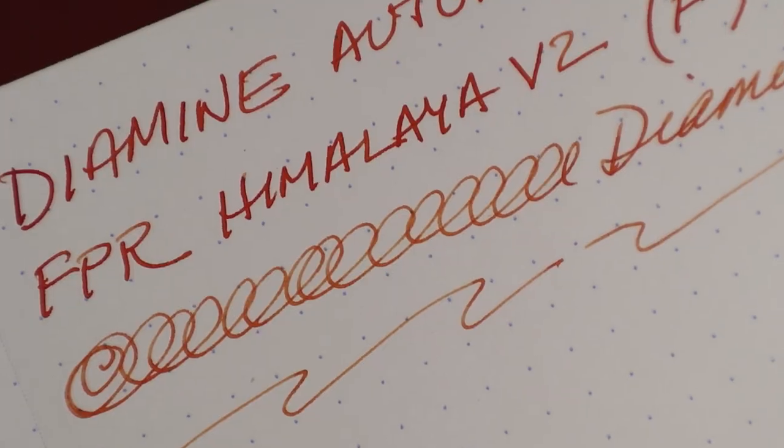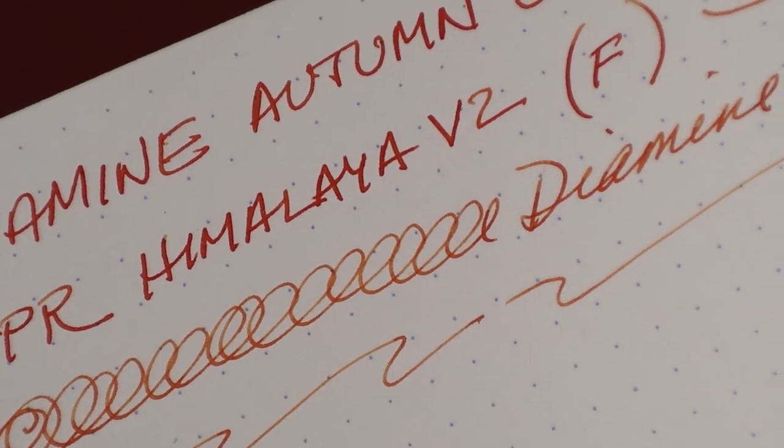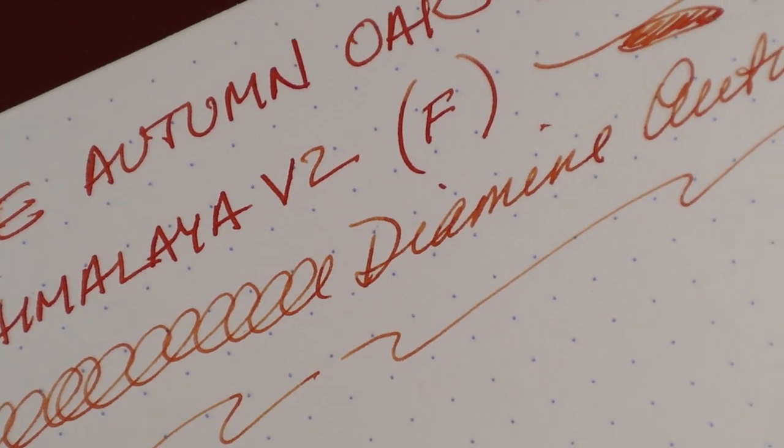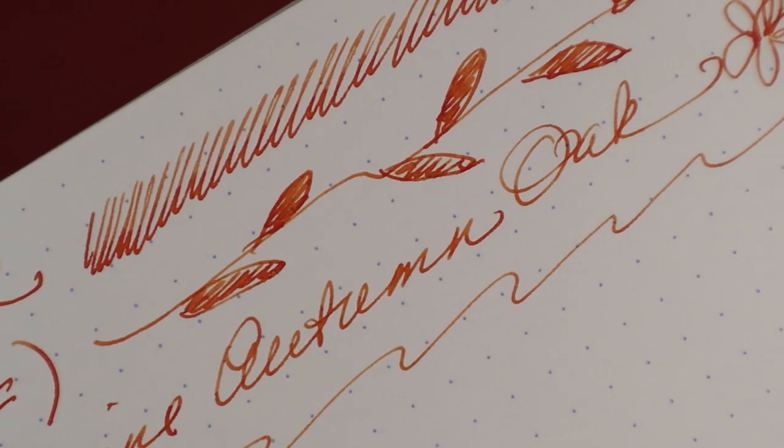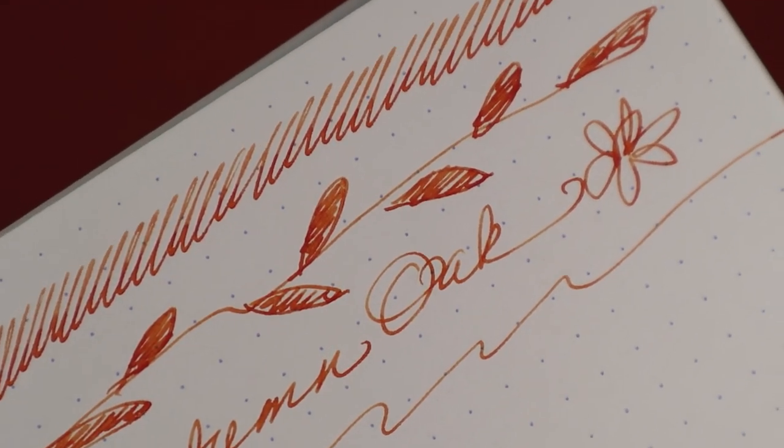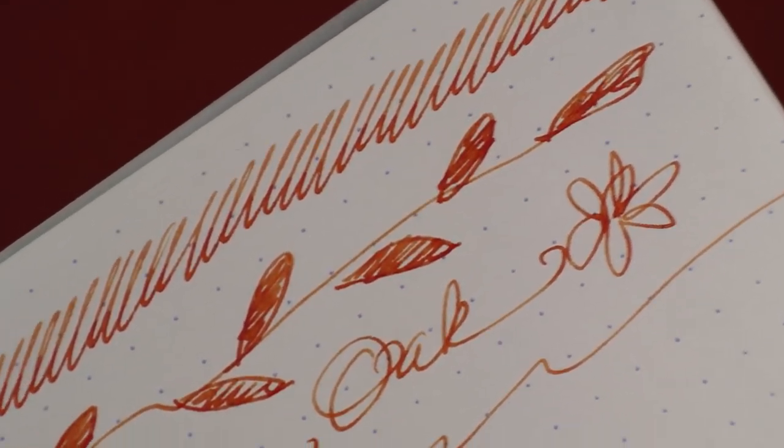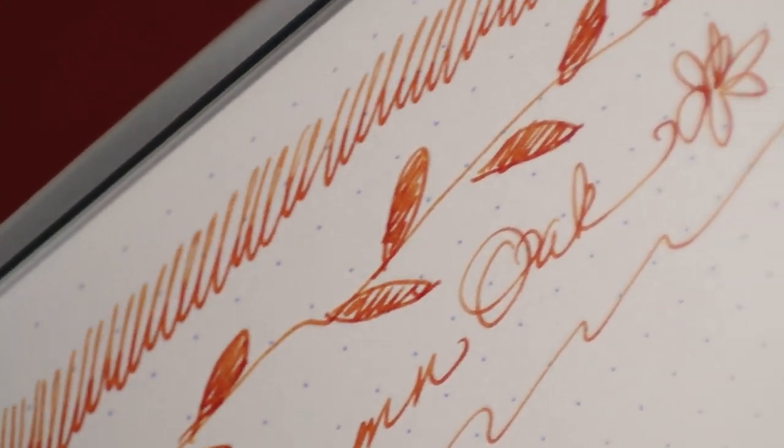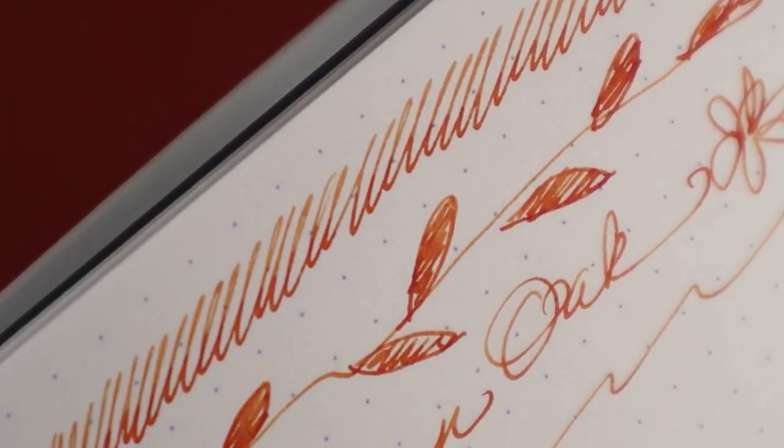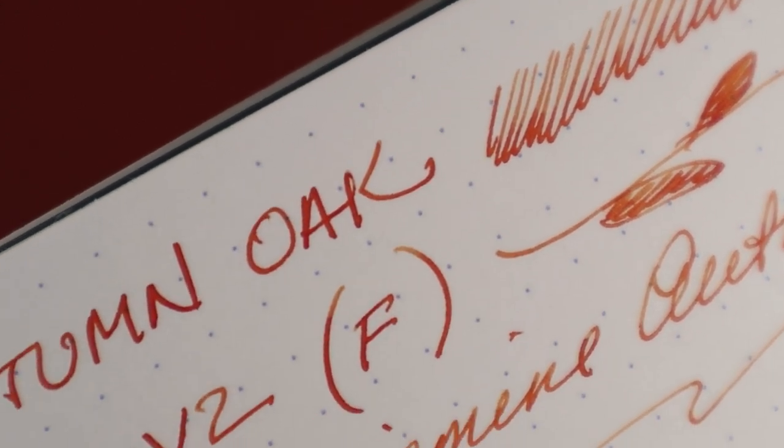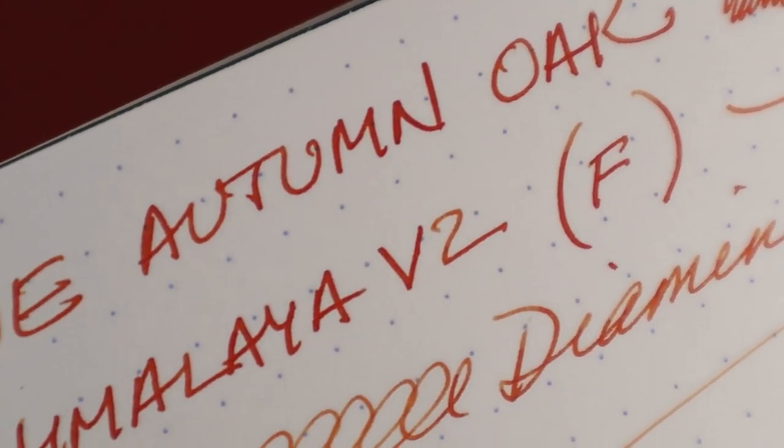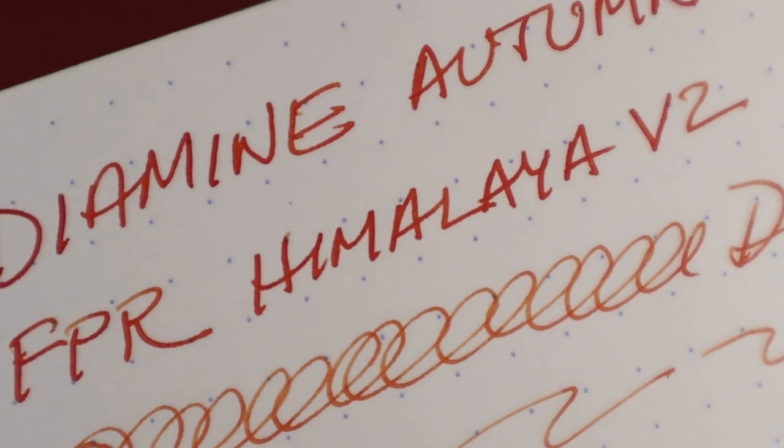But for now, I'm more happy with some $20 pens, such as the Hongdian Black Forest, which, just checking my notes, took zero tinkering to work. Wait, did Hongdian change their name to Assvine? Why? Of all the things to name yourself, why Assvine?